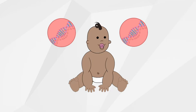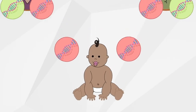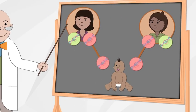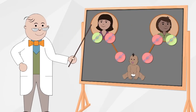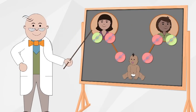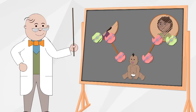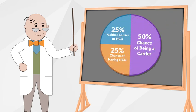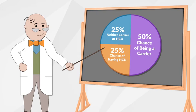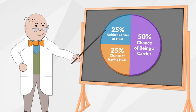These children inherit one non-working HCU gene from each parent. Parents of children with HCU are carriers or have HCU themselves. Most people don't know they're carriers. When both parents are carriers, there is a 1 in 4 chance their child will inherit HCU. It is possible for a child to not be a carrier if they inherit a working gene from both parents.